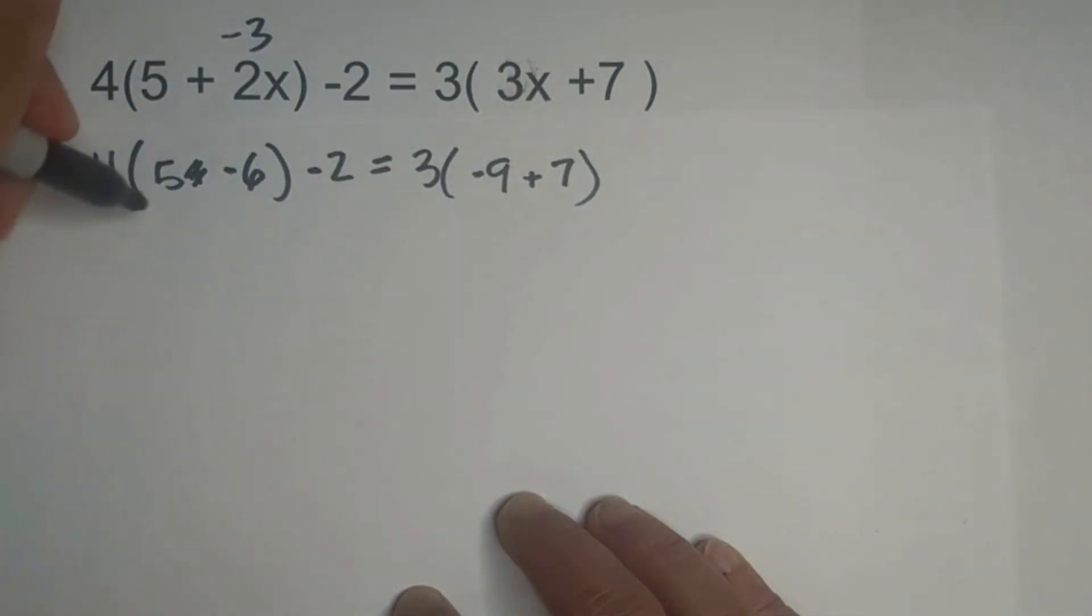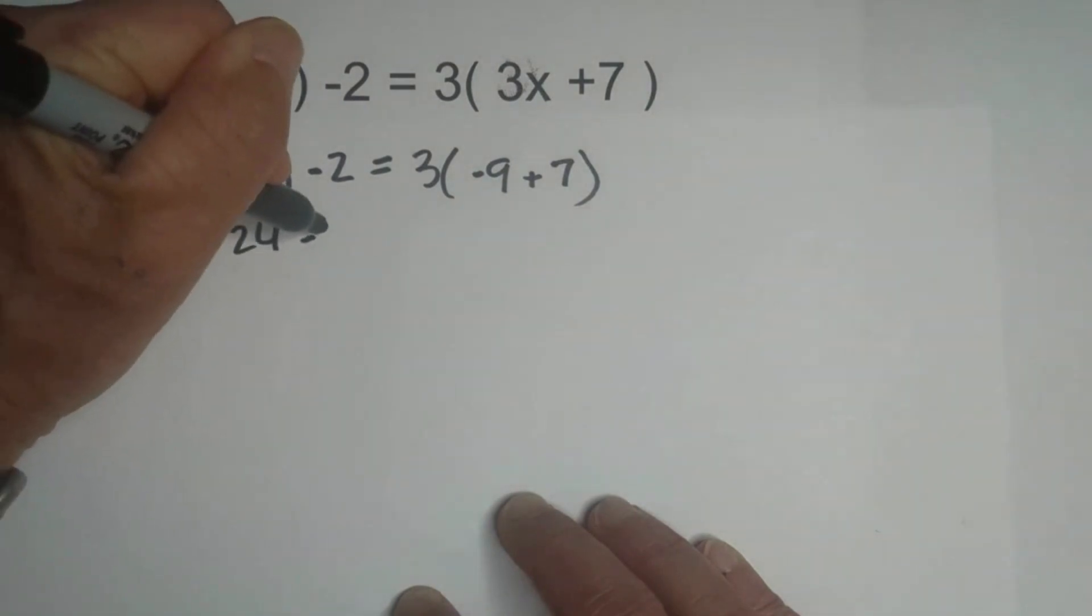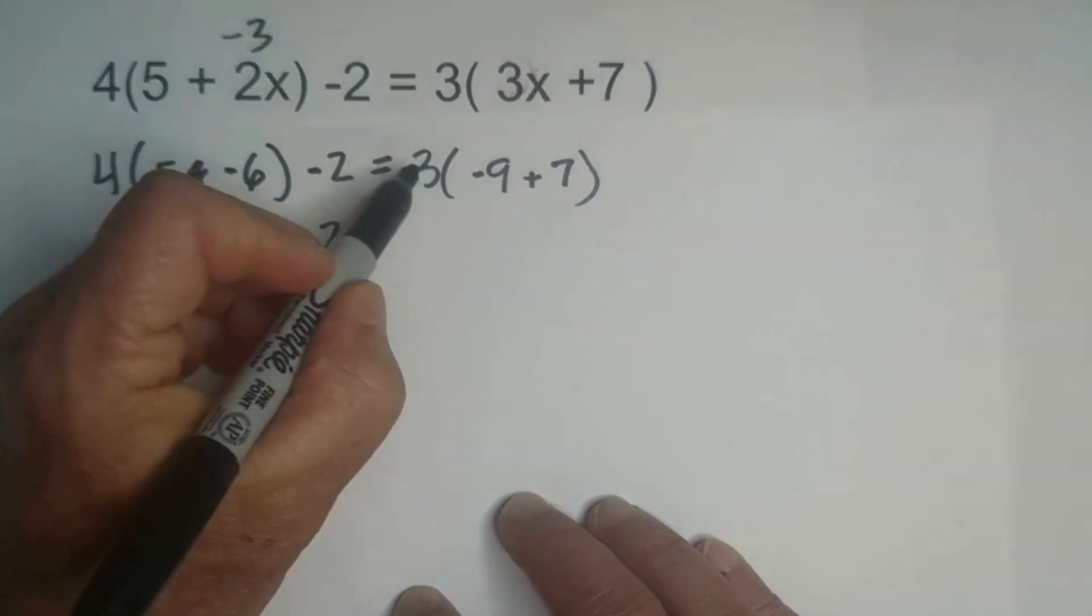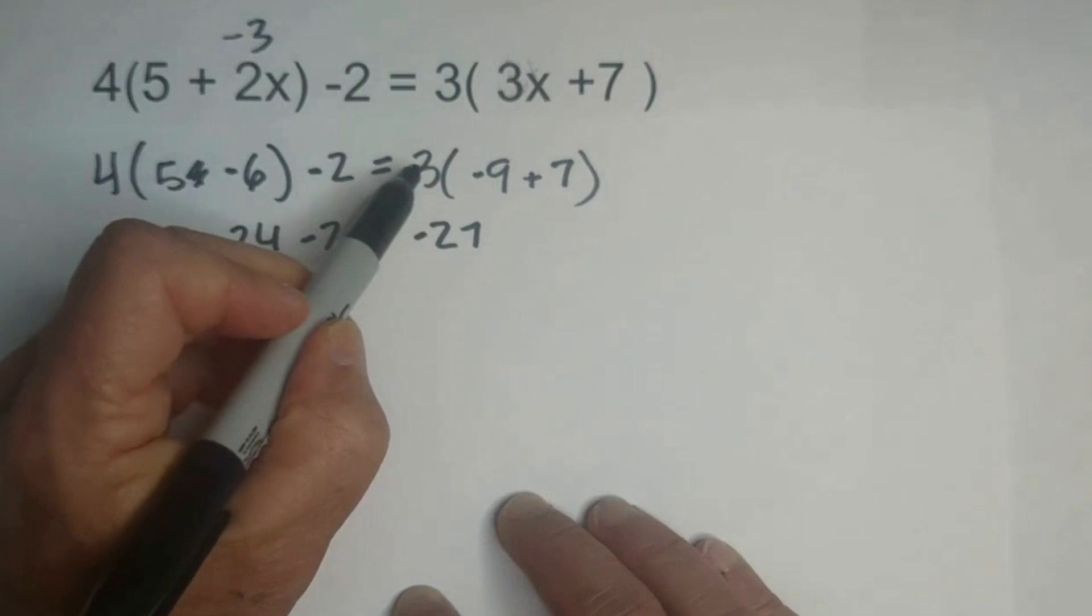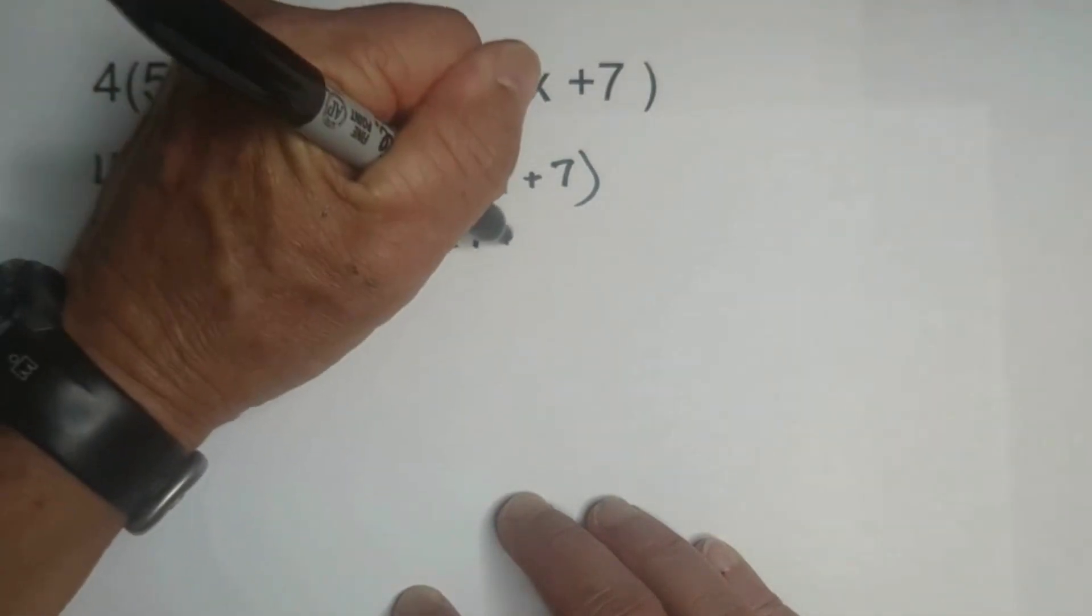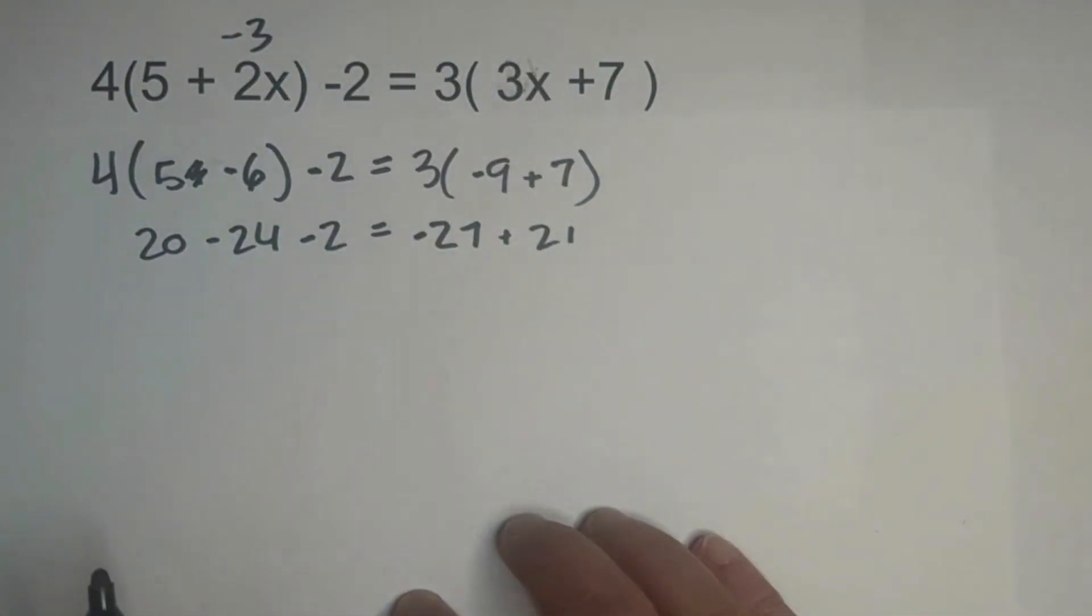So now let's distribute, 4 times 5 is 20, 4 times negative 6 is negative 24, remember the negative 2 there, and then we have 3 times 9 which is negative 27, and then 3 times 7 is a positive 21.